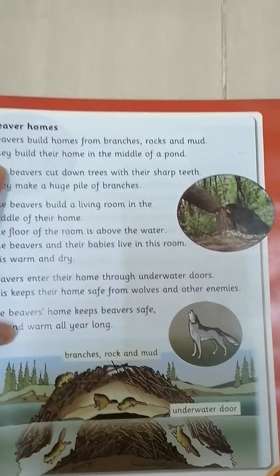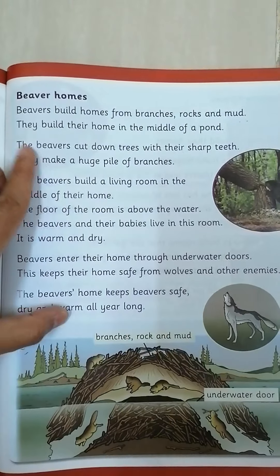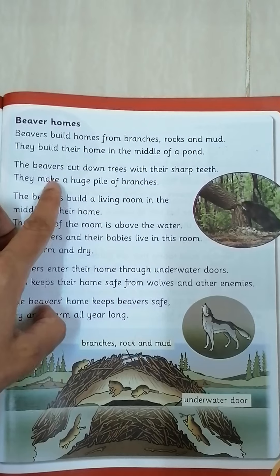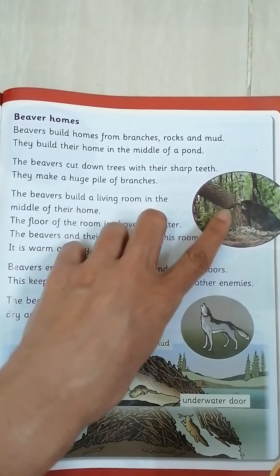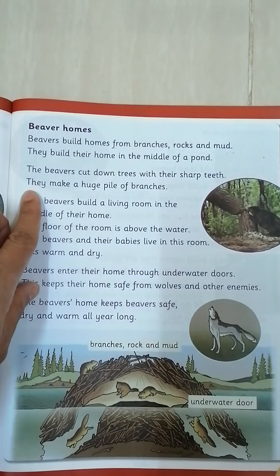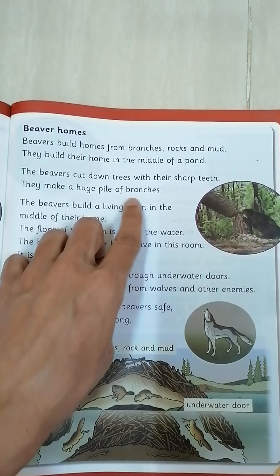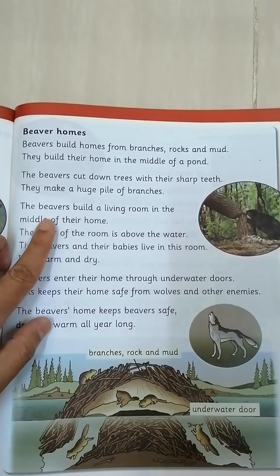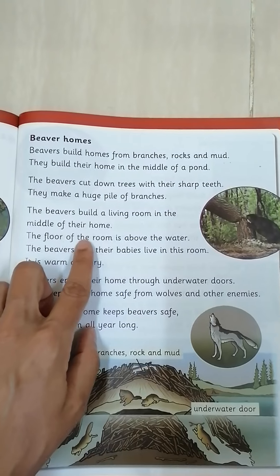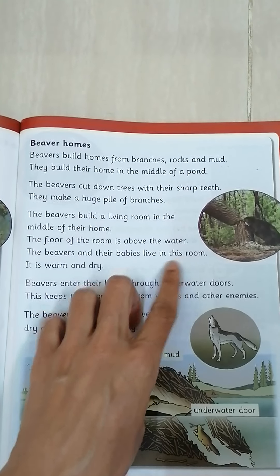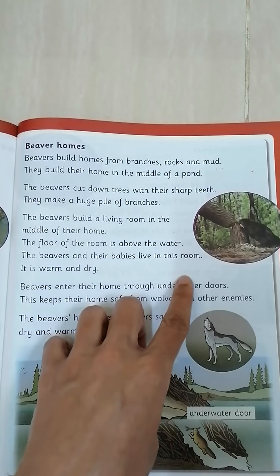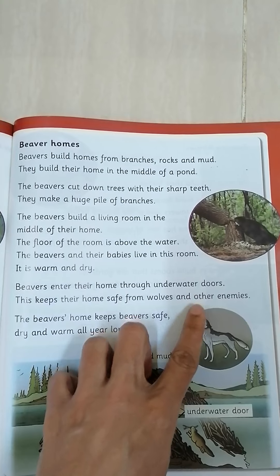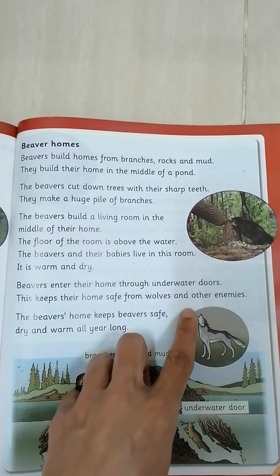Now let's read about beaver homes. What's the meaning of beaver? This is a beaver. Beavers build homes from branches, rocks, and mud. They build their homes in the middle of a pond. The beavers cut down trees with their sharp teeth — they can cut the tree. They make a huge pile of branches. Branches are those little sticks we take from the trees. The beavers build a living room in the middle of their home. The floor of the room is above the water. The beavers and their babies live in this room. It's warm and dry. Beavers enter their home through underwater doors. This keeps their home safe from wolves and other enemies.